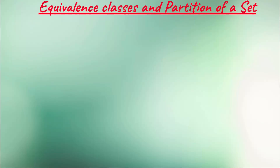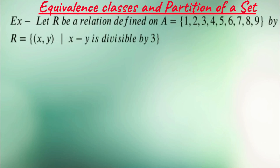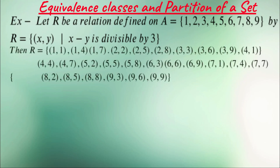One more example: Let R be a relation defined on A = {1, 2, 3, ..., 9}, defined as the set of ordered pairs (x, y) such that x minus y is divisible by 3 — the difference is divisible by 3. First, list all the elements of R. Clearly, it is an equivalence relation.